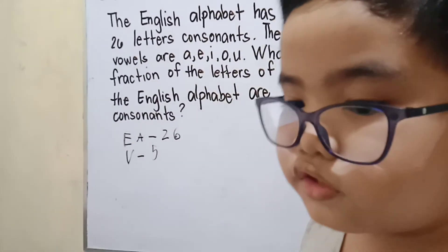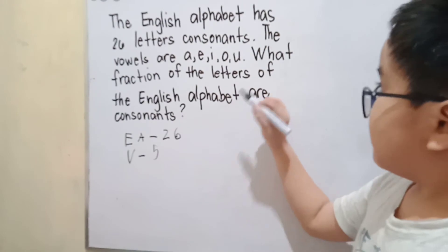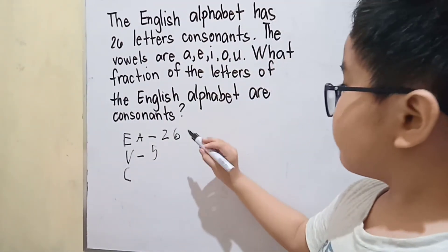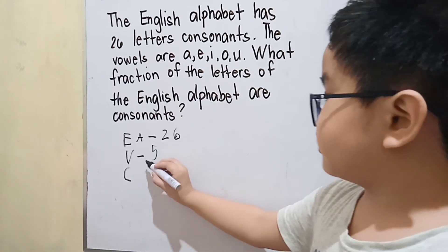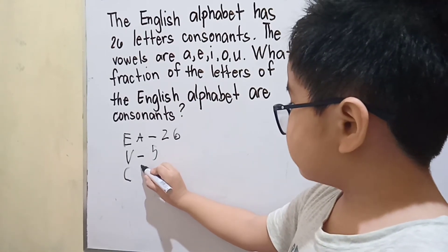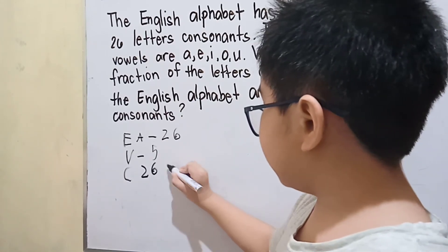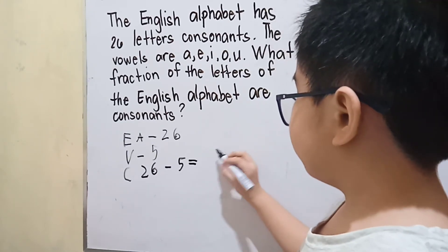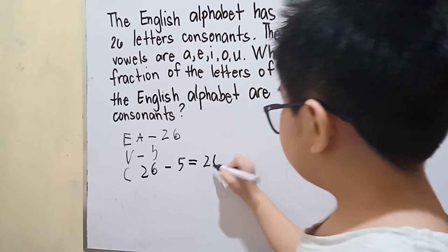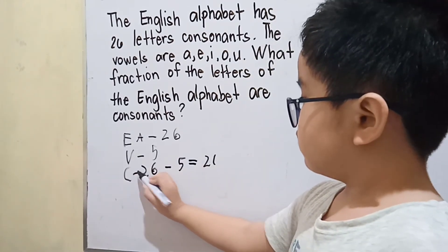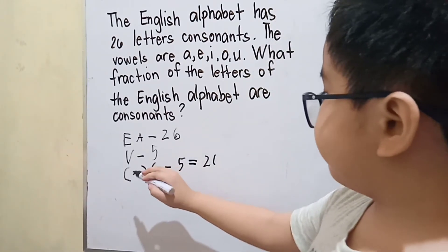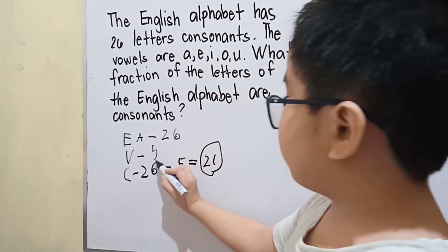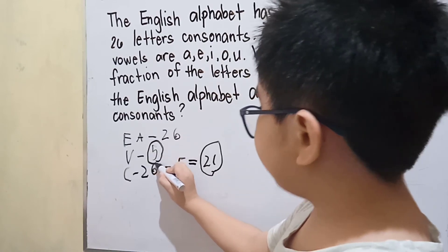Let us know also how many consonants we have. So we have 26 letters. We will subtract 5 from 26. We have 21. So the number of consonants are 21 letters and the vowels are 5 letters.